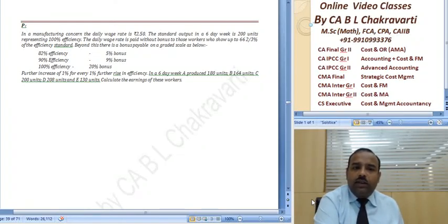In a manufacturing concern, the daily wage rate is 2.5. The standard output in a six day week is 200 units representing 100% efficiency. The daily wage rate is paid without bonus to those workers who show up to 66% of the efficiency.